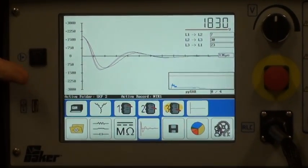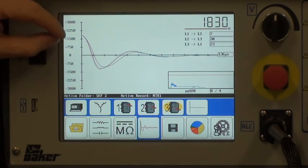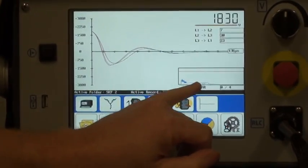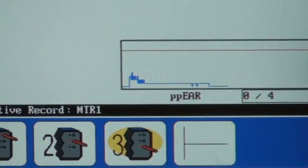Once we record that level, this is our screen. Slight imbalance there, but the PP-EAR is showing no real issues, so the test is complete. That's the result.